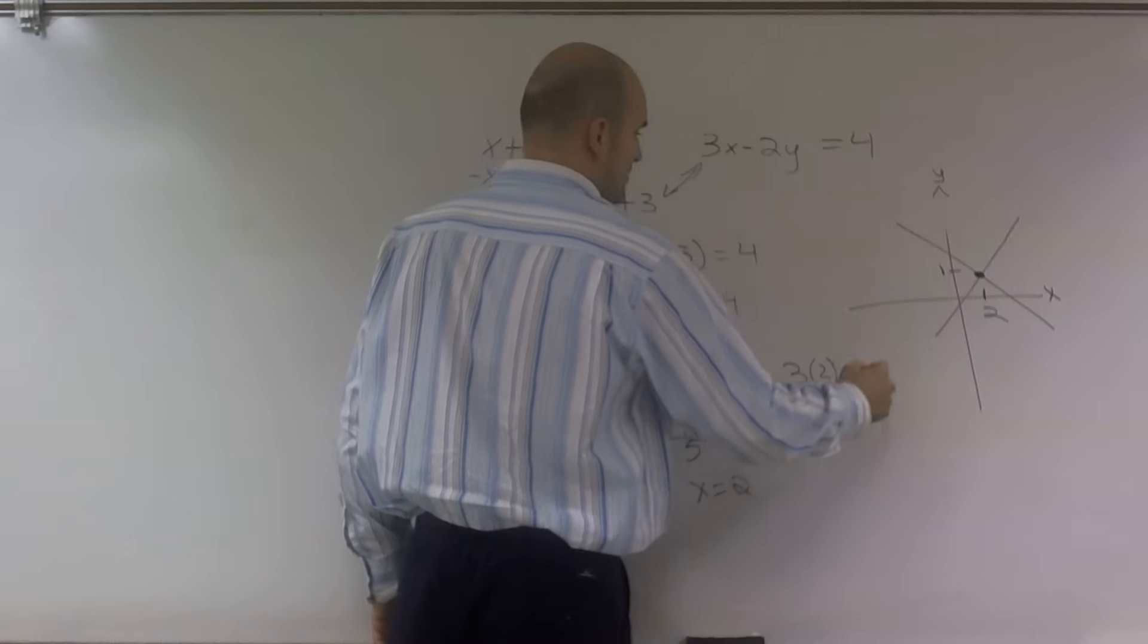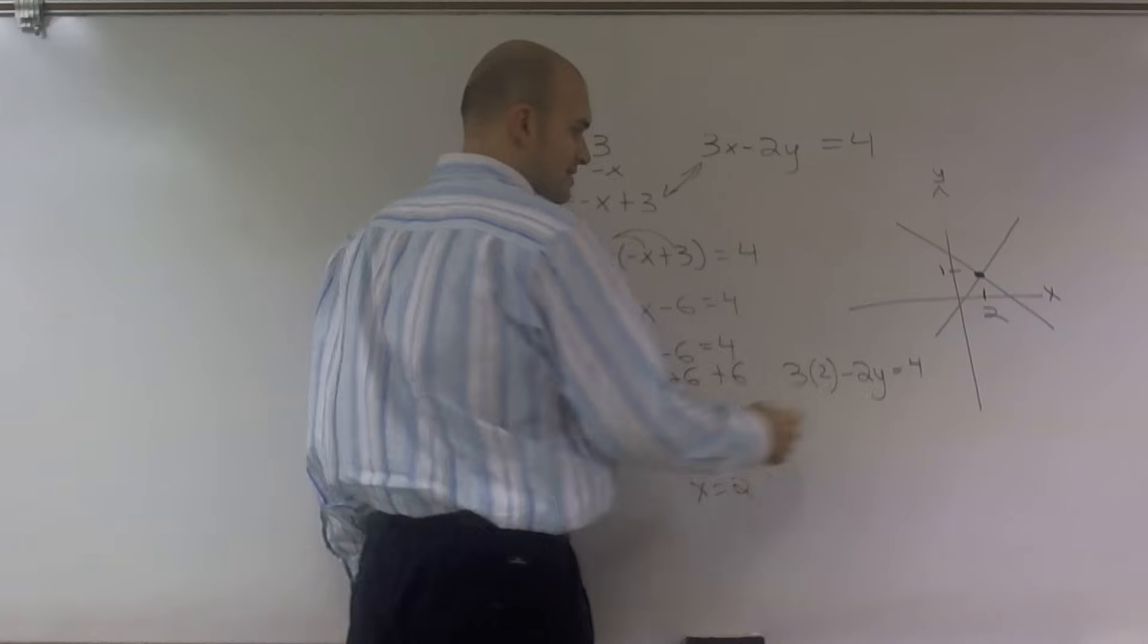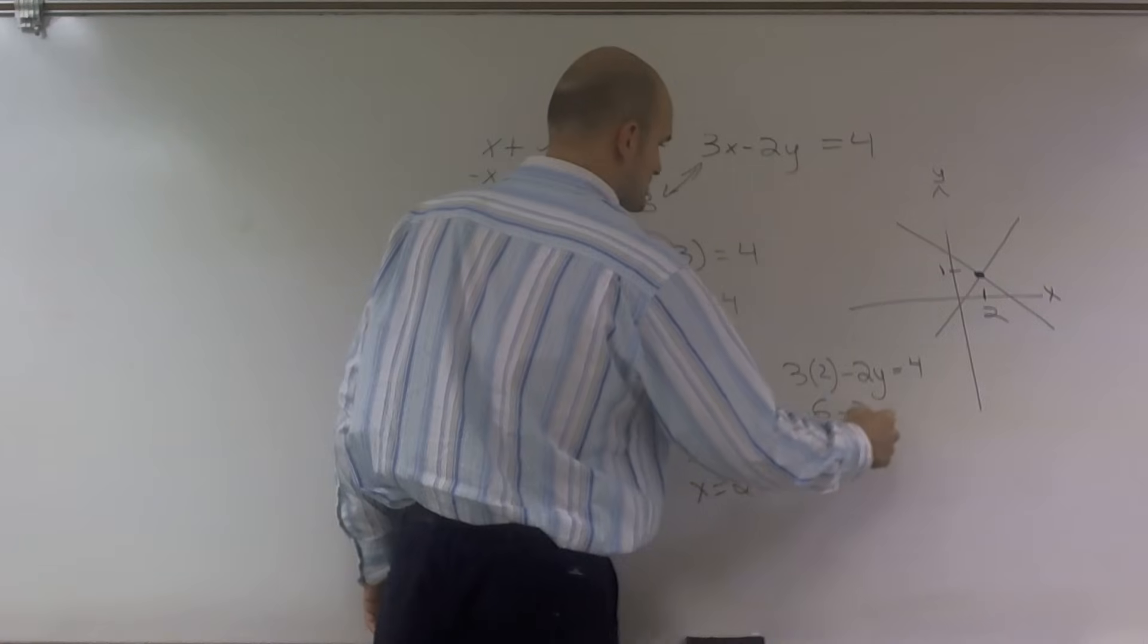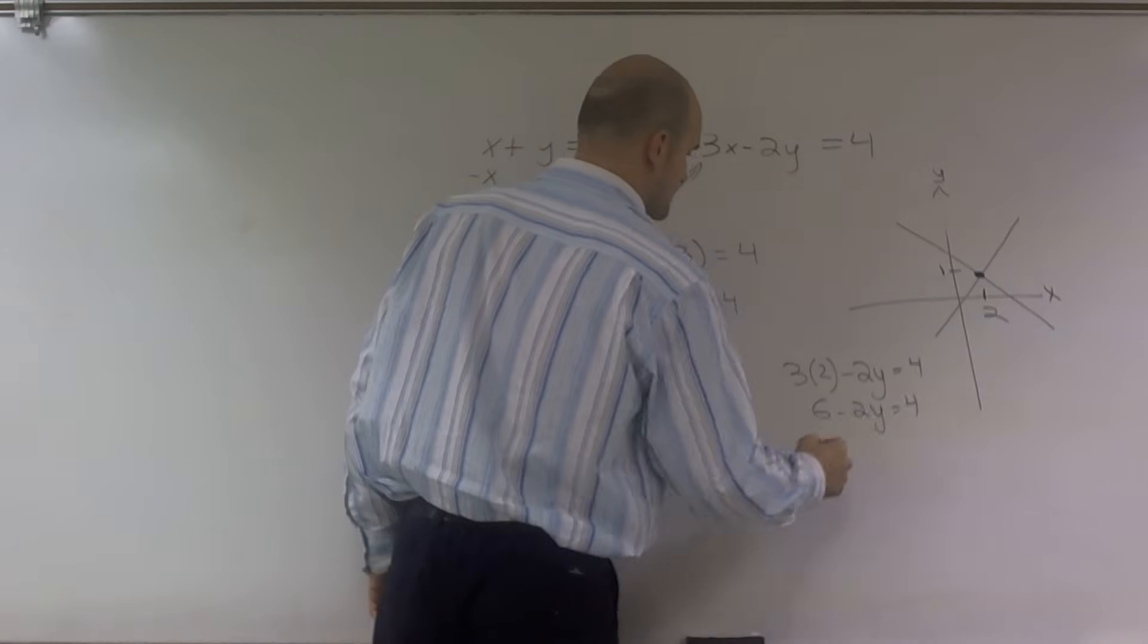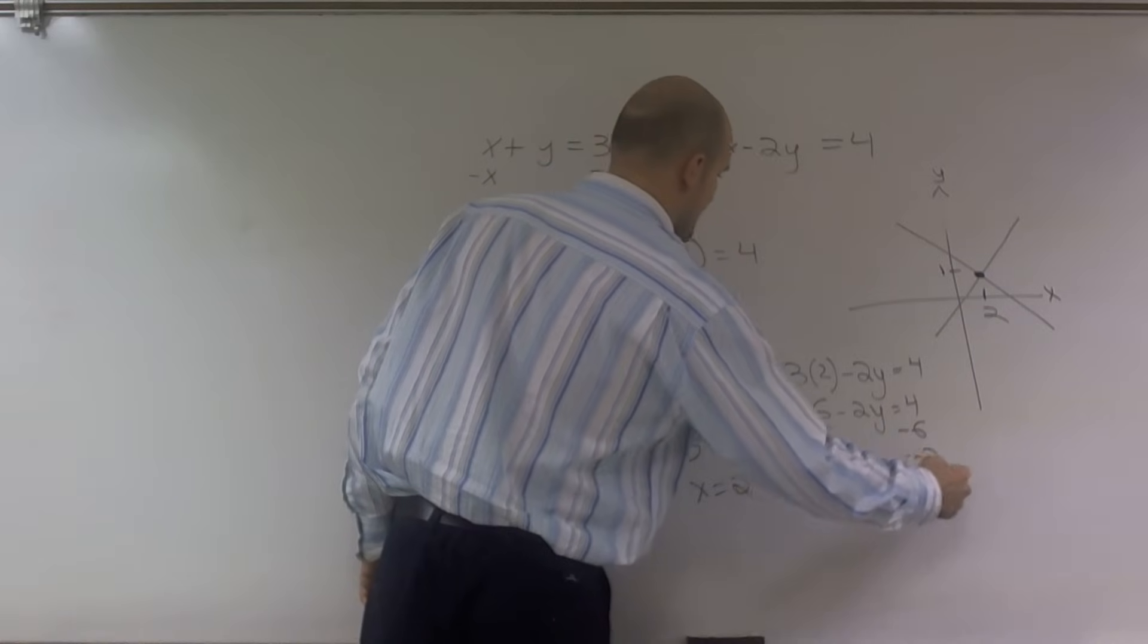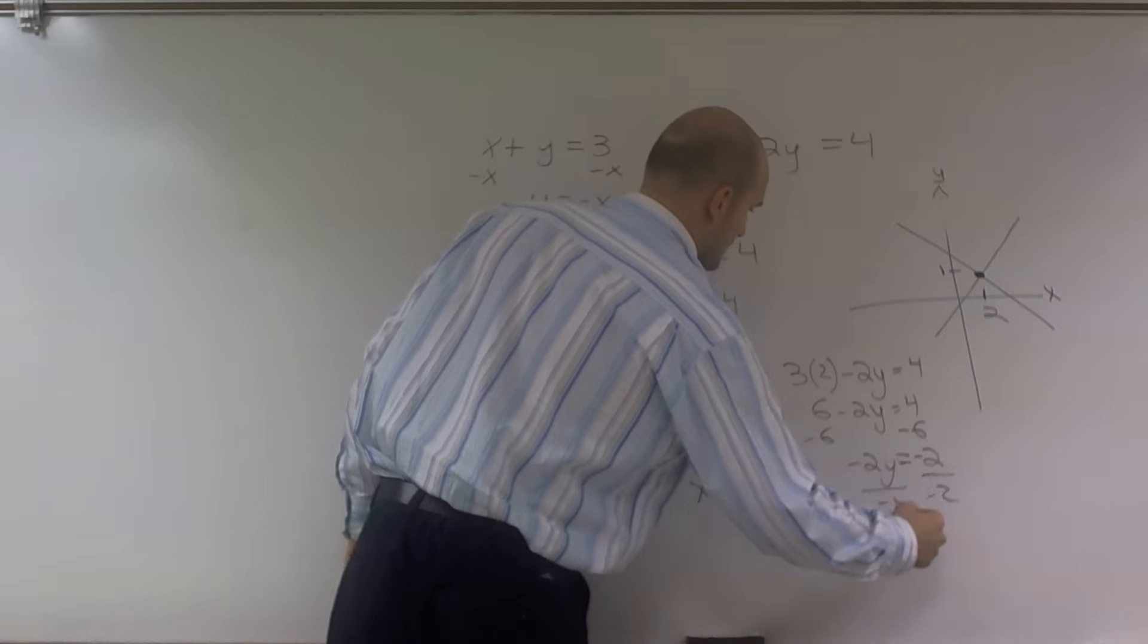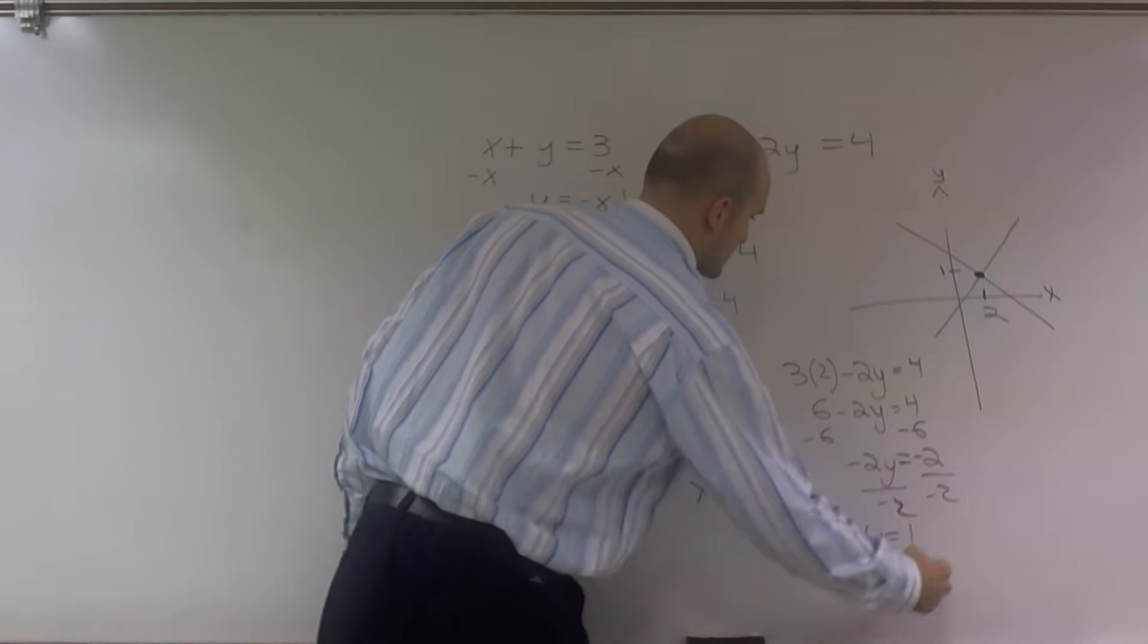Or you could have plugged it in this equation. 3 times 2 minus 2y equals 4. 3 times 2 is 6 minus 2y equals 4. Subtract 6. Negative 2y equals negative 2. Divide by negative 2. y equals 1.